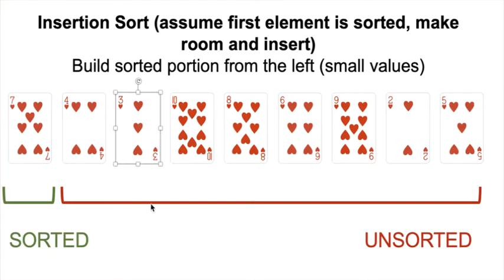You can see down here I've got a green bracket denoting the sorted portion of the array and a red bracket denoting the unsorted portion. Each iteration the sorted portion will grow by one card and the unsorted portion will shrink by one card. Once the sorted portion is the entire array and there are no more cards to insert, we've finished insertion sort and our array is sorted.